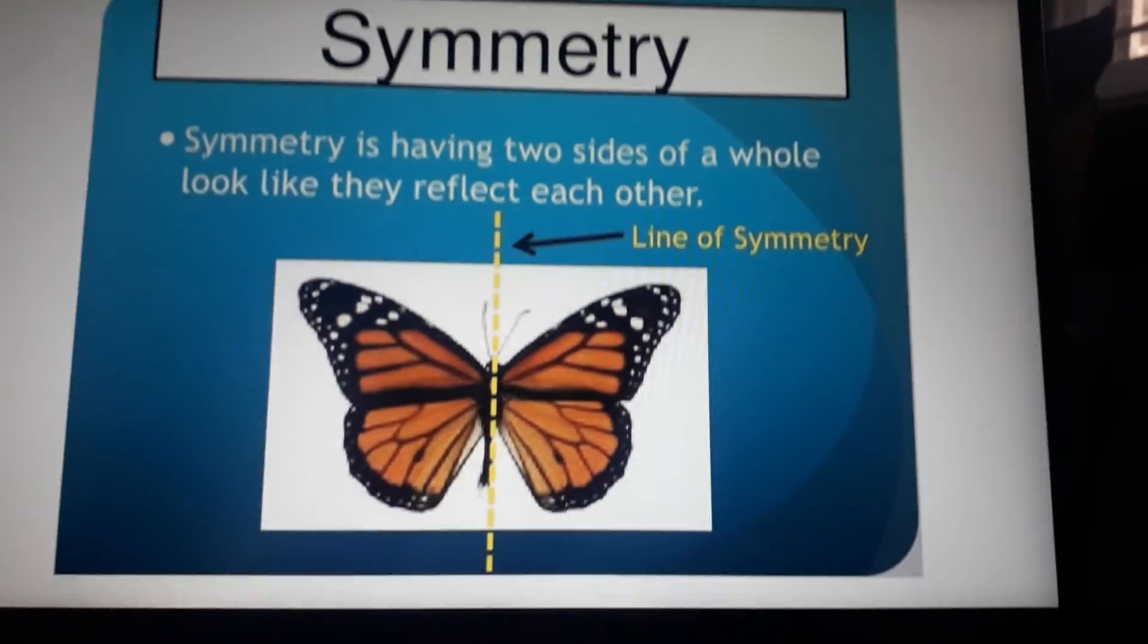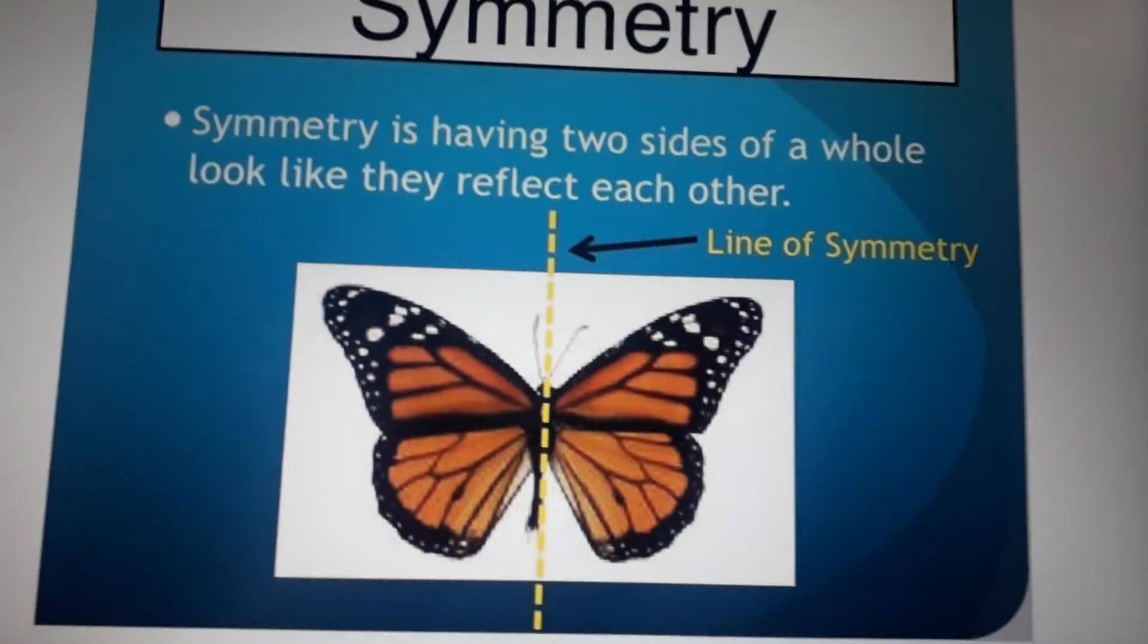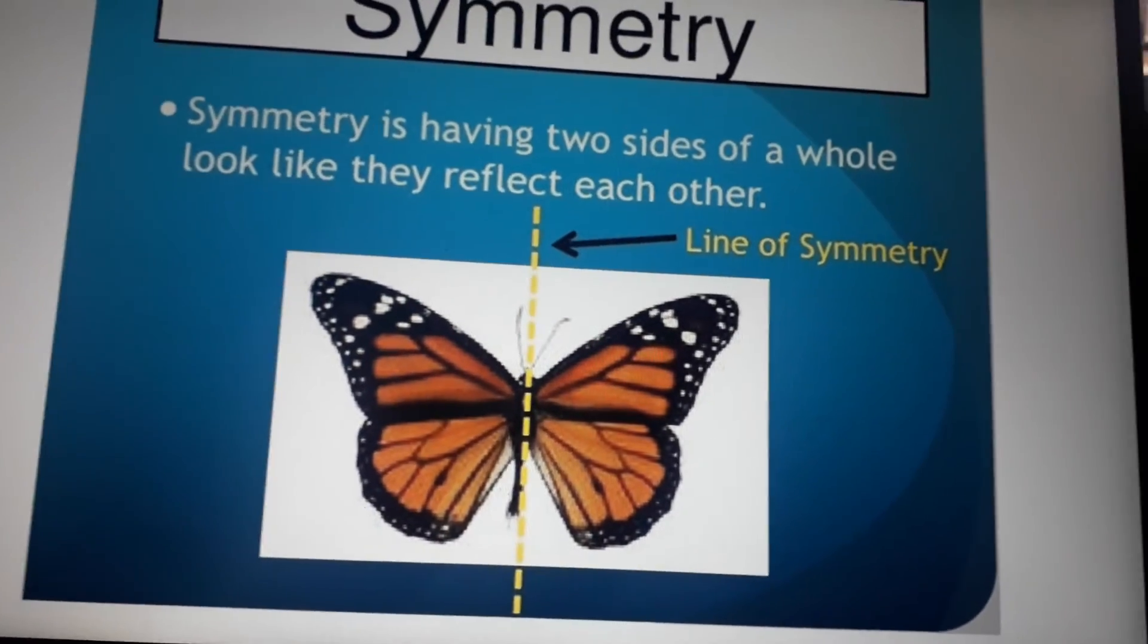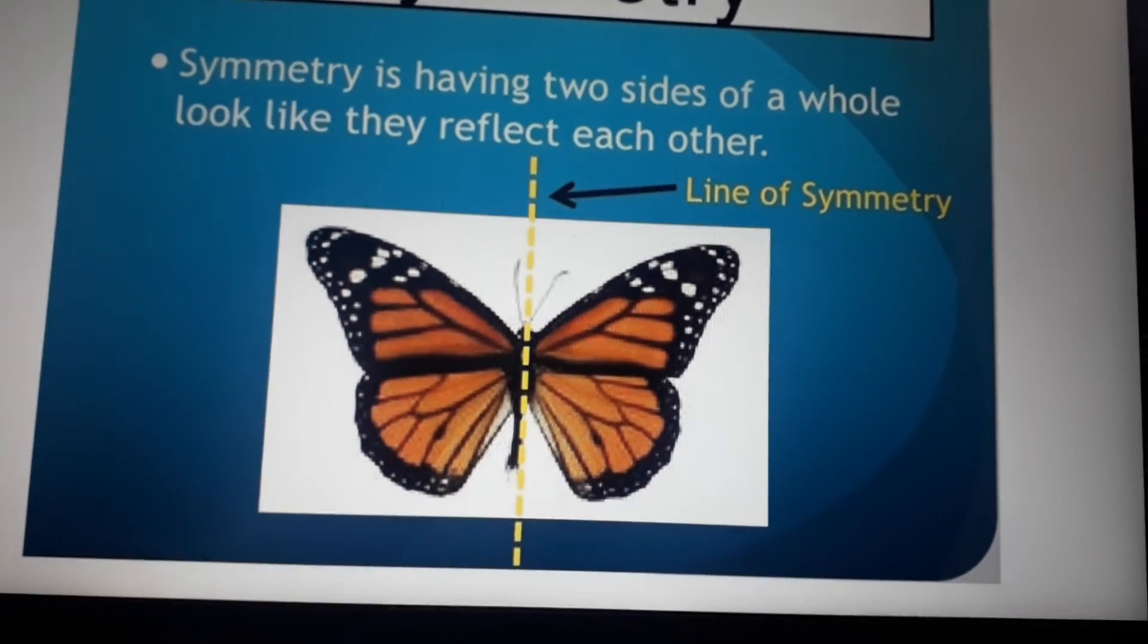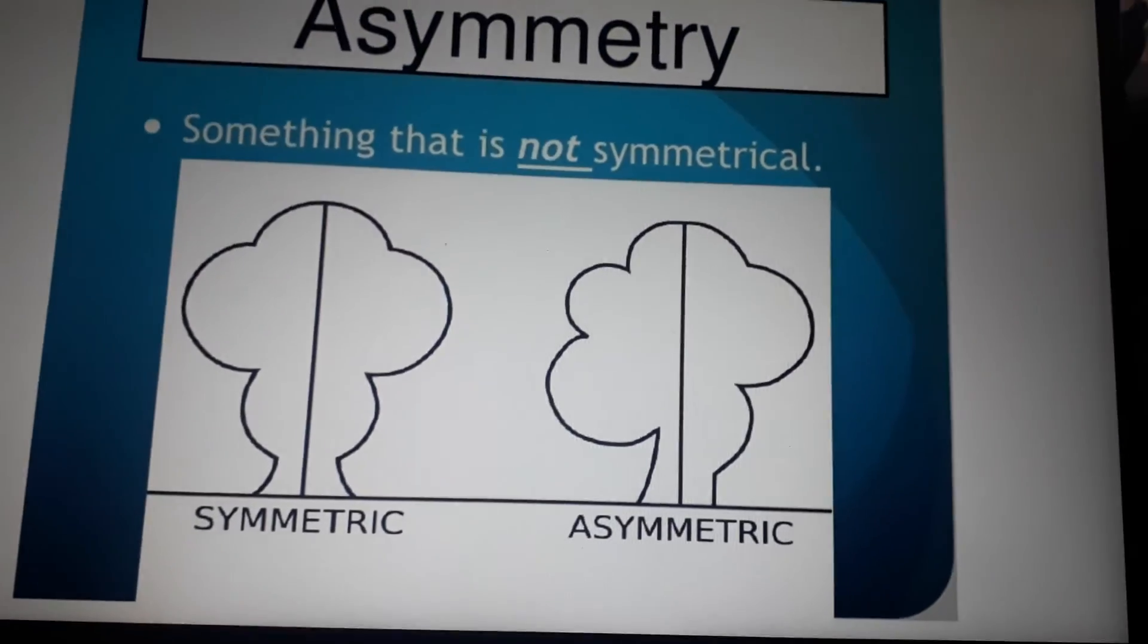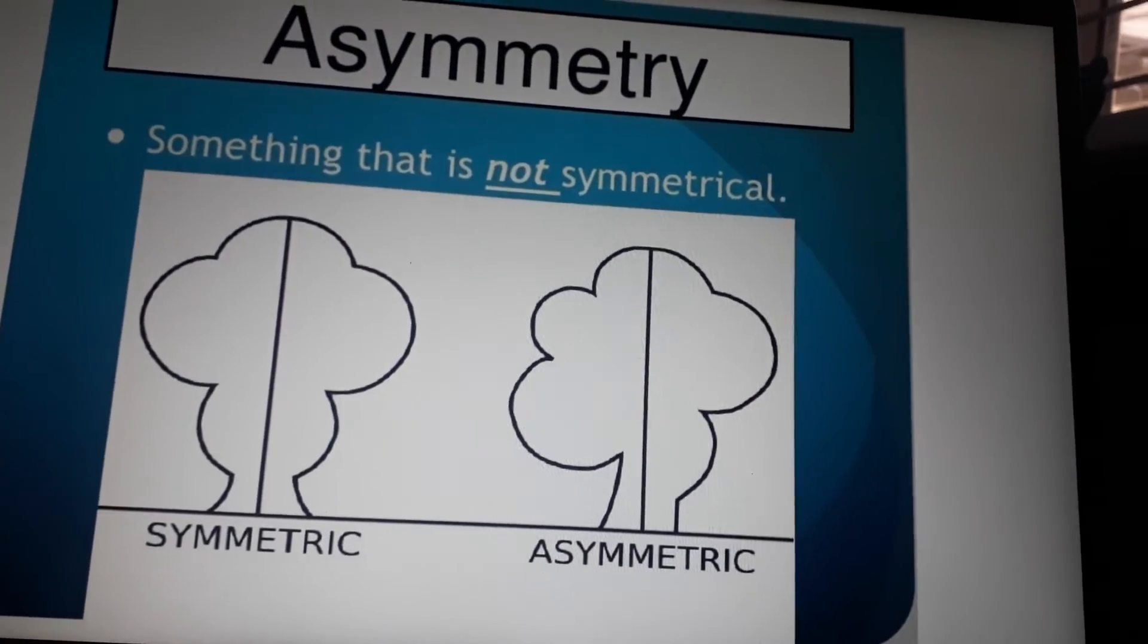Symmetry: symmetry is having two sides of a whole look like they reflect each other. The line of symmetry is highlighted in yellow color. Asymmetry: something that is not symmetrical.